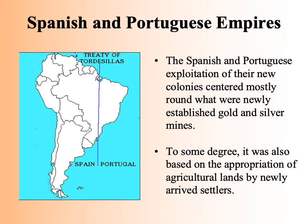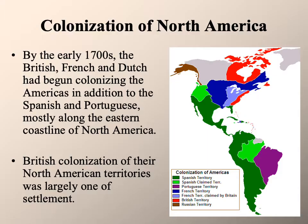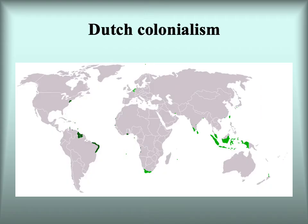Initially exploitation was largely centered around gold and silver mines, though at some point we do start to see the development of agricultural settlements, which would never be as extensive in the Spanish and Portuguese colonies as what would take place in North America. By the early 1700s, the British, French, and Dutch had begun colonizing the Americas, mostly along the eastern coastline of North America. Especially the British — colonization would be to a much greater extent about settler populations, large numbers of Europeans coming to the New World and settling in the North American colonies, primarily engaging in agriculture.